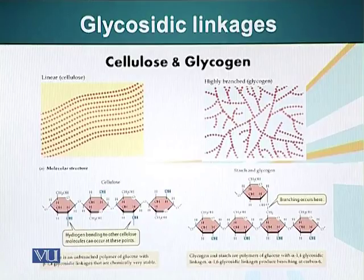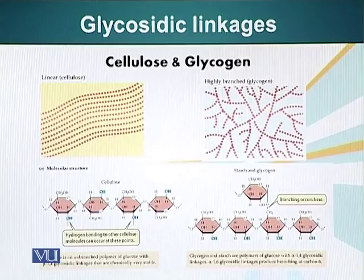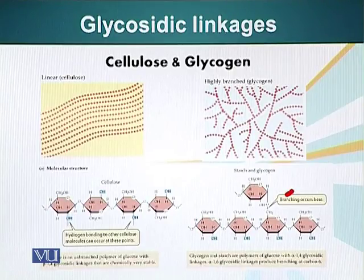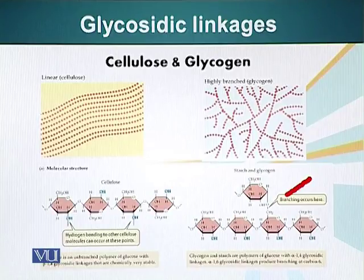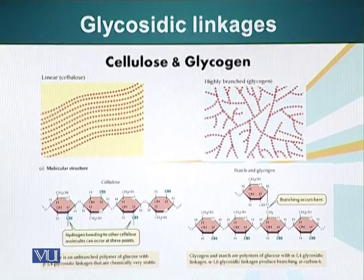You will also notice there is branching in glycogen, as depicted on the screen. This branching is a result of alpha-1,6 bond. Here is the alpha-1,6 bond highlighted on the screen. This allows this carbohydrate polymer to form branches and makes it more efficient to store energy.